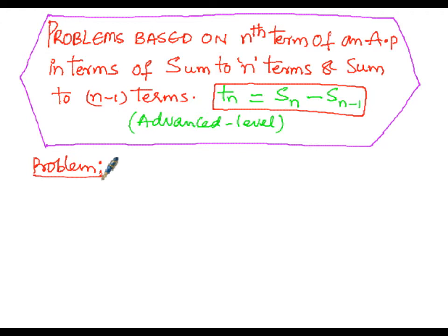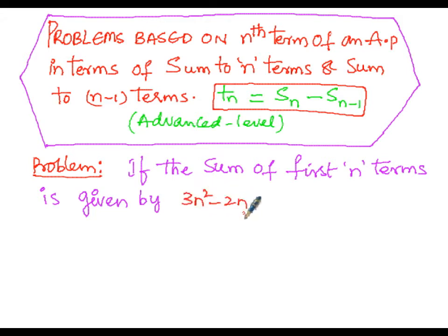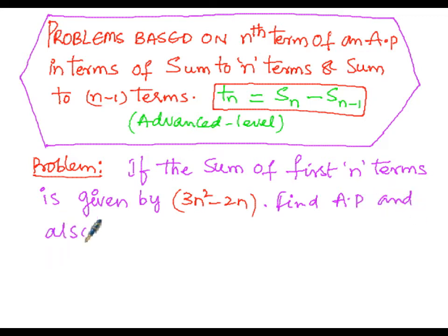In this problem, if the sum of first n terms is given by 3n squared minus 2n, that is S(n) equals 3n squared minus 2n, then we have to find the arithmetic progression and also the 20th term, that is t20, as well as the sequence of the arithmetic progression.